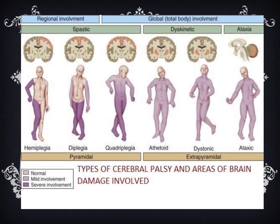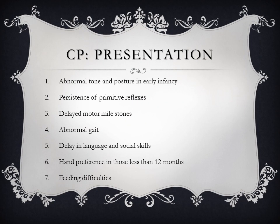This is a summary picture of the various types of cerebral palsy and the corresponding areas of brain involved. Cerebral palsy should be considered if there is damage to the brain, abnormal tone and posture in early infancy, persistence of primitive reflexes such as Moro reflex, delayed motor milestones, abnormal gait, developmental delay in language and social skills, and hand preference in those less than 12 months old, as this can be a sign of hemiplegic cerebral palsy.